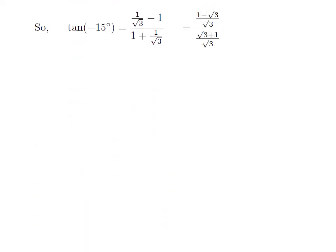Let us simplify the numerator expression. Here, square root of 3 will be in the denominator, so the numerator becomes 1 minus square root of 3 upon square root of 3. Same way, the denominator expression becomes square root of 3 plus 1 upon square root of 3. Further simplification gives the expression 1 minus square root of 3 upon square root of 3 plus 1, by cancelling out the common factor 1 upon square root of 3.